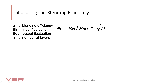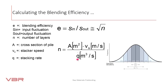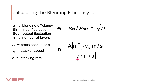The number of layers is calculated as the cross section of the pile times the stacking speed divided by the stacking rate. Note that this formula applies only when we have normally distributed layers — symmetric bell curves. From this formula, you can already start thinking about what must be done to keep efficiency as high as possible in the longitudinal pre-blending system.